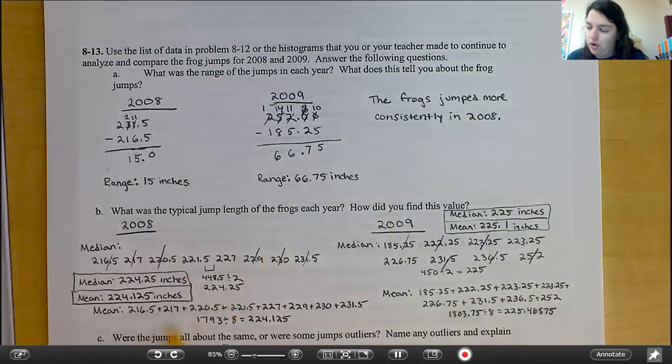For your mean, you want to add up all your values together and divide by how many data points there are, which would be eight. So, when I take all these values, add them up, I get 1,793 divided by eight. That is 224.125.